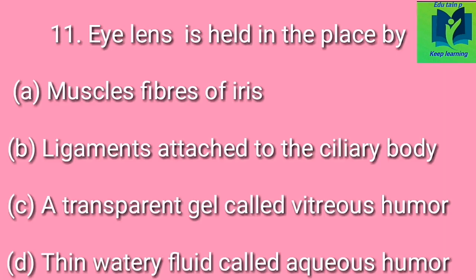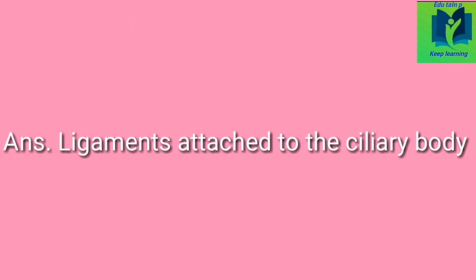Eye lens is held in place by. Option A: muscle fibers of iris. Option B: ligaments attached to the ciliary body. Option C: a transparent gel called vitreous aqueous humor. Option D: thin watery fluid called aqueous humor. Answer: ligaments attached to the ciliary body.